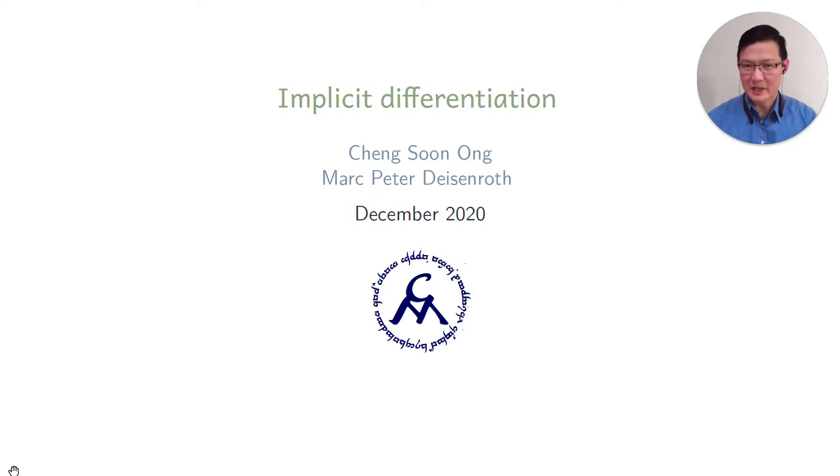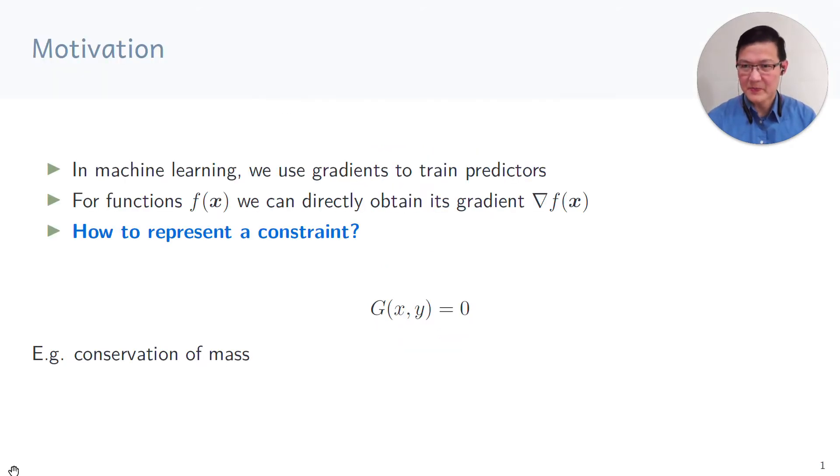In this lecture, we will look at implicit differentiation. In machine learning, we often use gradients to train predictors, and for some functions we can directly obtain its gradient, denoted by nabla f. The question we want to answer is how we represent a constraint, in particular an equality constraint. In many cases, there are domain reasons to include such an equality constraint, such as conservation of mass.